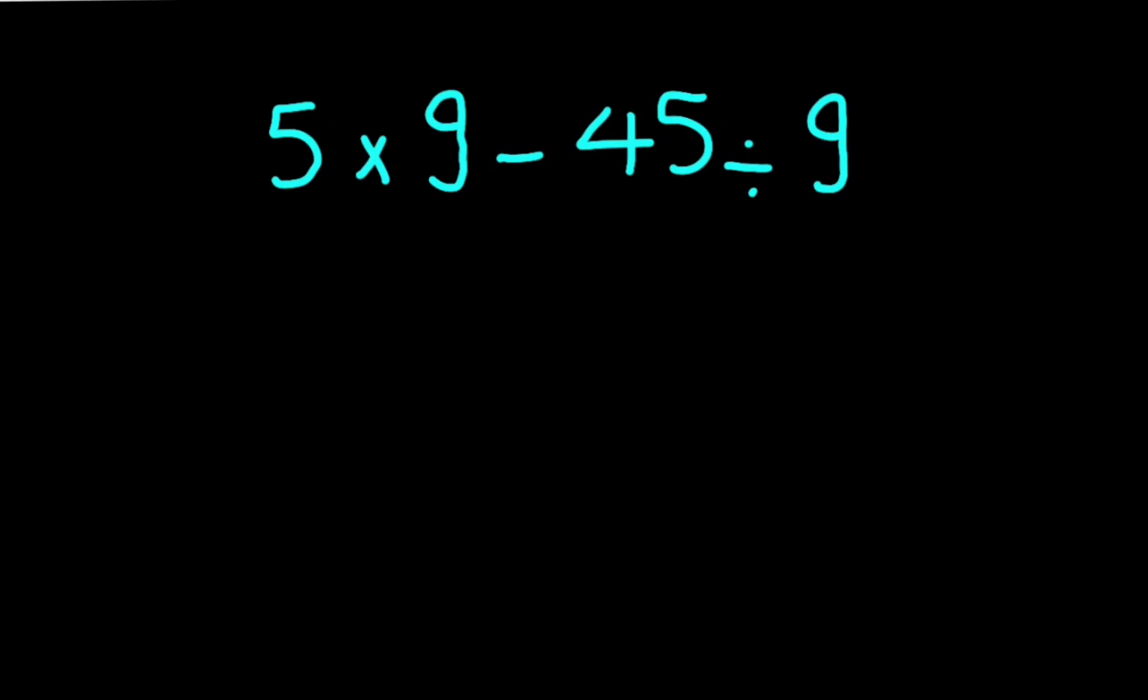Hey guys, and welcome to our channel. 5 times 9 minus 45 divided by 9. Please subscribe to our channel if you like this video. Now, 5 times 9 gives us 45, 45 minus 45 equals 0, and 0 divided by 9 gives us 0.